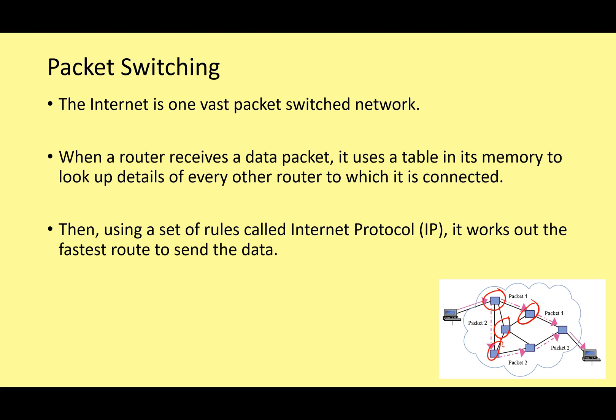Using a set of rules called the internet protocol — IP — the router works out the fastest route to send the data. That fastest route can change depending on things like network traffic. The TCP/IP system is how we implement packet switching across the internet.